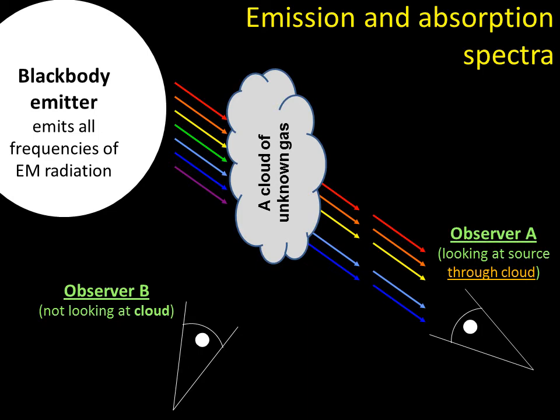Which means Observer A, well, they don't get any green or purple. So they have gaps in their rainbow, in their spectrum. They don't have any green and purple. So this gives them some information about what that gas contains. So that's called an absorption spectra, because the gas is absorbing certain colours and not letting them through.